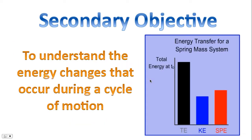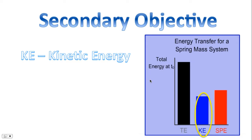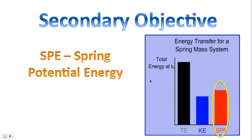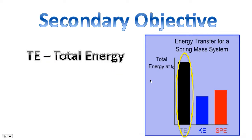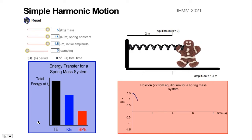Next, we are going to explore our secondary objective, which is to understand the energy changes that occur during a cycle of motion. Specifically, we'll be focusing on kinetic energy, spring potential energy, and total energy. Total energy is the sum of kinetic plus potential. Let's see that in action here.